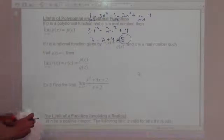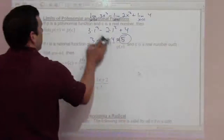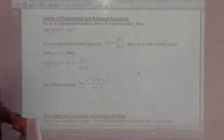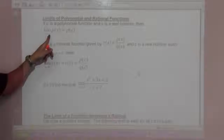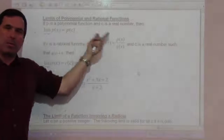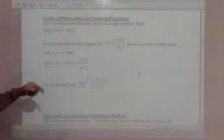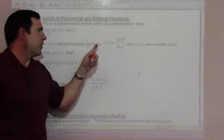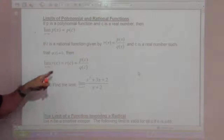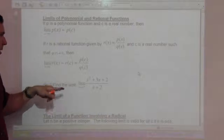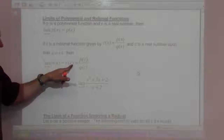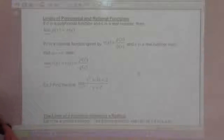Limits of polynomial and rational functions. If p is a polynomial function and c is a real number, then the limit as x goes to c of p of x equals p of c — you don't have to split them all up, you can just plug it in. If r is a rational function given by r of x equals p of x over q of x, and c does not make the denominator zero, then the limit as x goes to c of r of x is r of c, which is p of c over q of c.